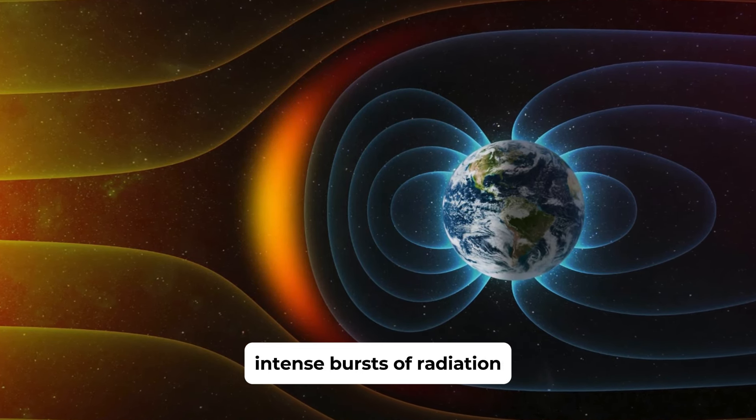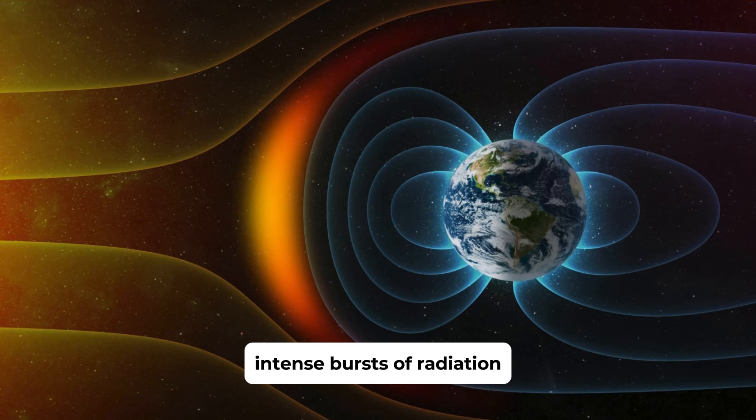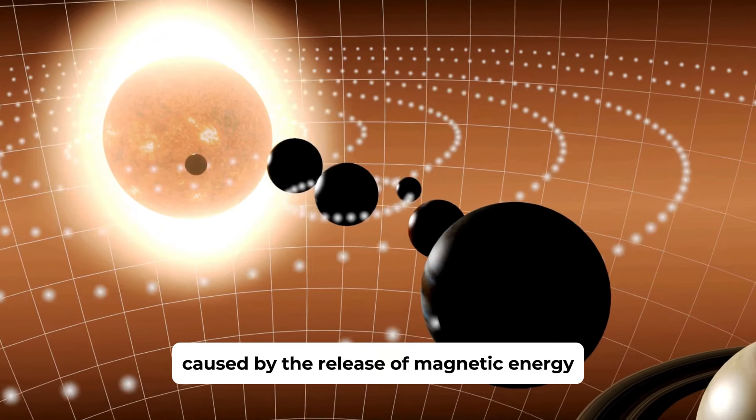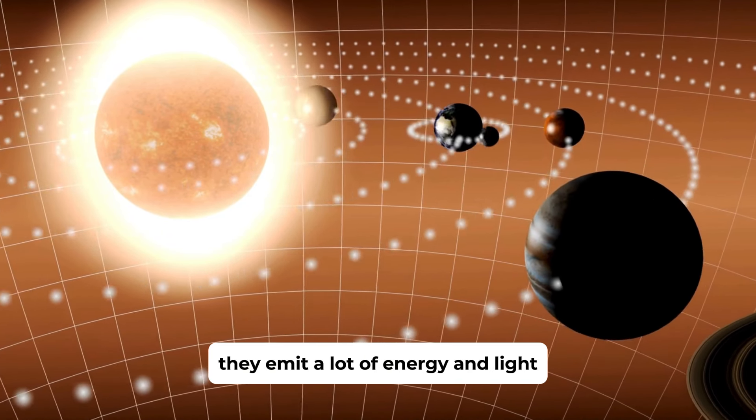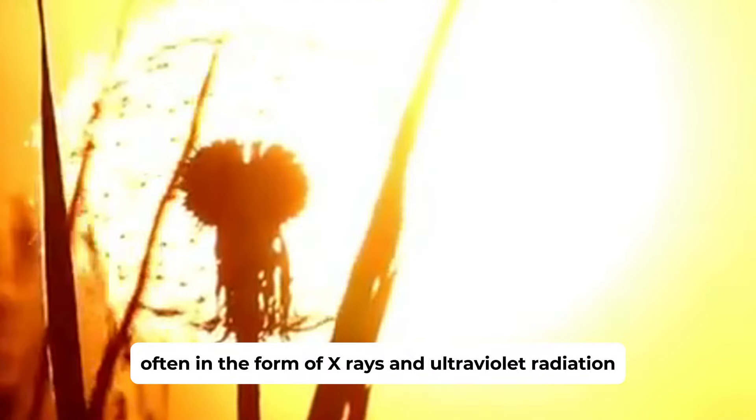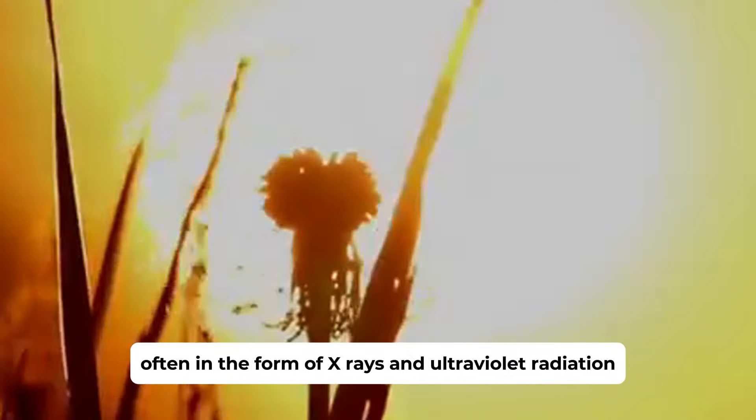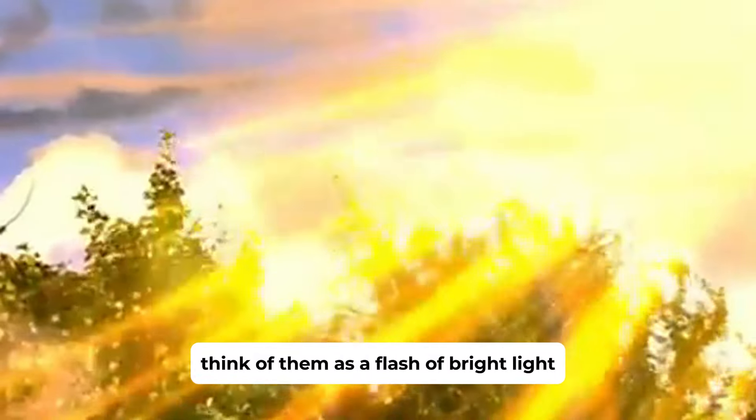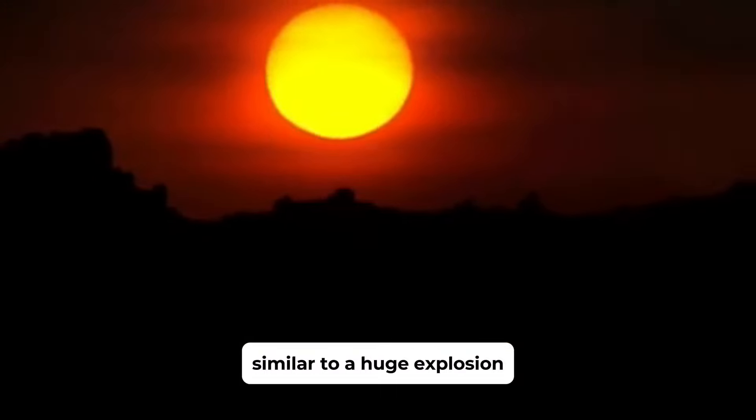Solar flares are sudden, intense bursts of radiation caused by the release of magnetic energy associated with sunspots. They emit a lot of energy and light, often in the form of X-rays and ultraviolet radiation. Think of them as a flash of bright light and heat on the Sun's surface, similar to a huge explosion.